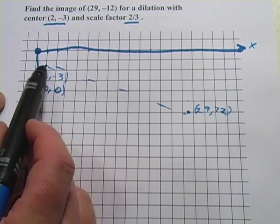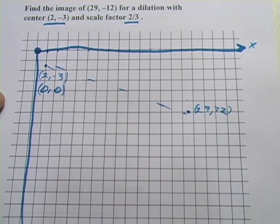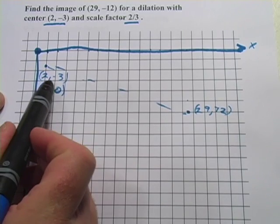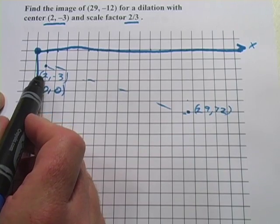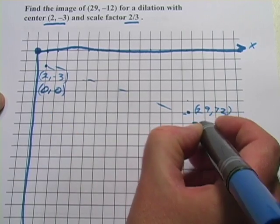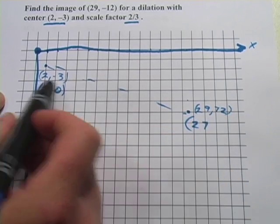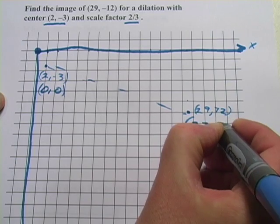And the next thing I need to determine is what would these coordinates be if this point was (0,0)? Well, you could count. You could figure out how far this is away on the x and on the y. Or it amounts to the same thing. You could just subtract this point, these coordinates, from these coordinates. So that would be 29 minus 2, that would be 27. And -12 minus a -3, that's like plus 3, so that would be -9.